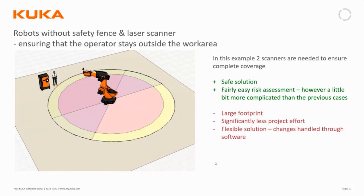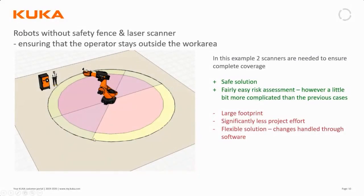In this case, in order to cover the complete working area of the robot, I need two scanners, and since they cover more than 180 degrees each they are also overlapping somewhat. That is how I get complete coverage in this application. The first scanner covers this area, and the second scanner covers this area, with overlap. Any restrictions defined in the overlapping area need to be configured in both scanners.